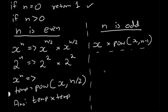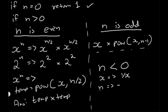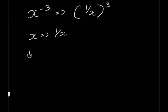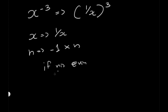We have one final case: when n is less than zero. In that case, we change x to 1/x and make n positive by multiplying it by negative 1. For example, x to the power of negative 3 is the same as 1/x to the power of 3. After that transformation, we just call the same even or odd functions.